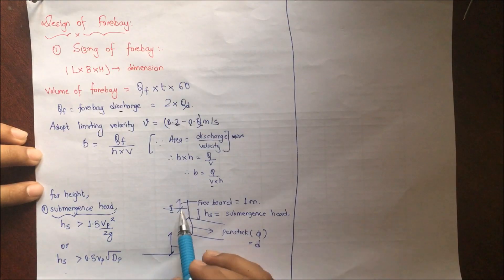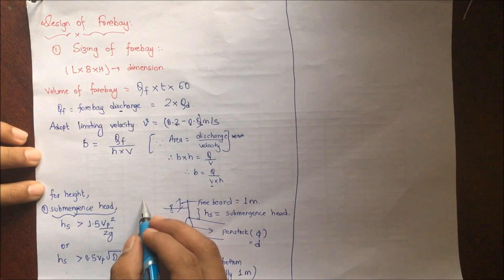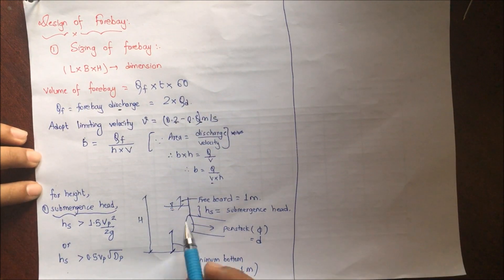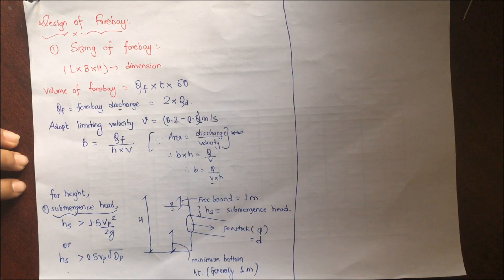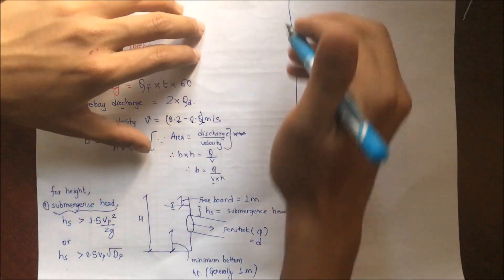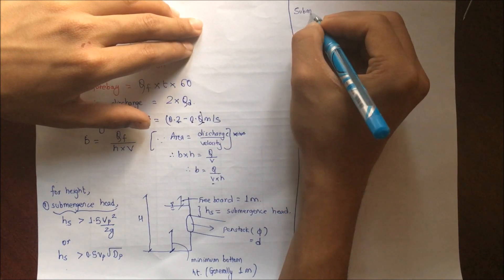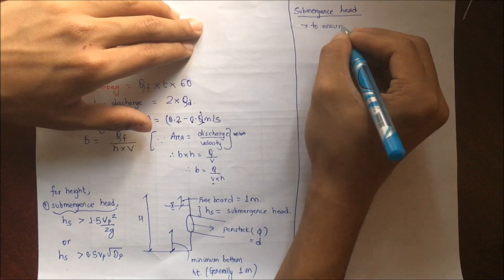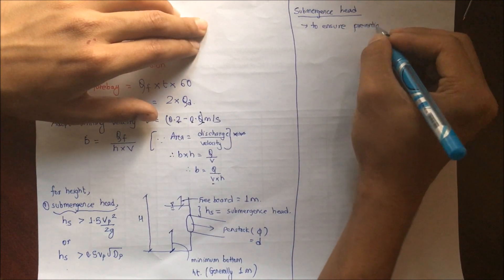So this is the height overall, and for submergence head you can see we have a figure over here. For the height you are providing a freeboard, generally 1 meter, and Hs is the submergence head, φ is the diameter, and minimum bottom height is the settling height, and that overall height is H. What is submergence head then?